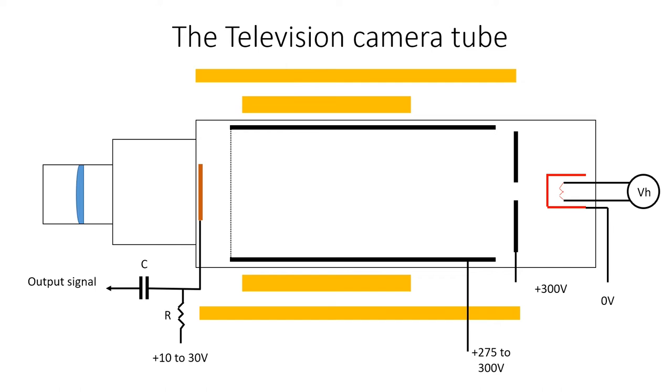A control grid is positioned between the cathode and the accelerator grid. When the electron beam scans back at the end of each line to start another line, then a negative voltage is applied to the control grid. This repels the electron beam back towards the cathode so that no output voltage signal occurs.